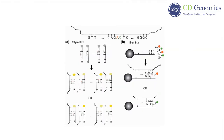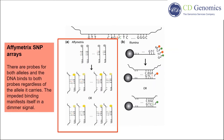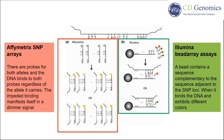The principles of both platforms are outlined in this figure. In the Affymetrix assays, there are probes for both alleles, and the DNA binds to both probes regardless of the allele it carries. The impeded binding manifests itself in a dimmer signal. In Illumina bead array assays, a bead contains a sequence complementary to the sequence adjacent to the SNP loci. It binds to the DNA and exhibits different colors.